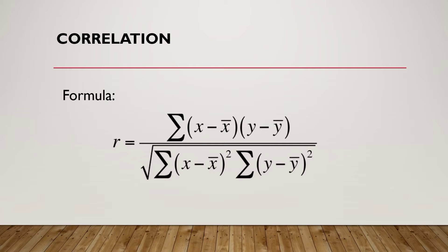We have a formula to determine the degree of correlation between two variables: r equals the summation of the product of (x minus x-bar) and (y minus y-bar), all over the square root of the summation of (x minus x-bar) squared times the summation of (y minus y-bar) squared. Here, x-bar is the average of all x data and y-bar is the mean of all y data.